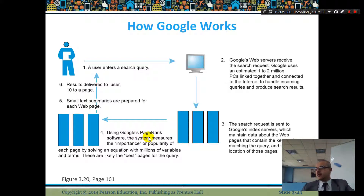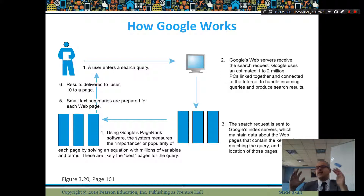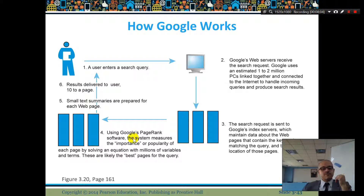Google uses its PageRank algorithm — every website has a rank. Google's algorithm solves an equation with millions of variables and terms to find the pages most likely to be the best for your query. For example, if you write 'face,' it will immediately show Facebook because Facebook has a high rank of one. A website no one knows about, that talks about faces, won't appear because it has a zero page rank. Small text summaries are prepared for each web page — that's what you see in results — and results are delivered to users, 10 to a page.